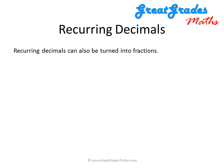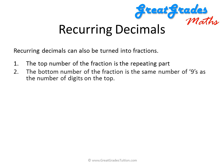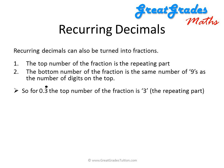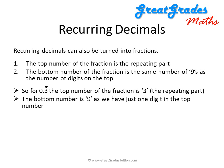Recurring decimals can also be turned into fractions using two steps. First, the top number of the fraction is the repeating part of the decimal. Second, the bottom number is the same number of nines as there are digits on top. So for 0.3333... — written as 0.3 with a dot above it — the top number is 3 and the bottom number is 9, giving us 3 over 9.